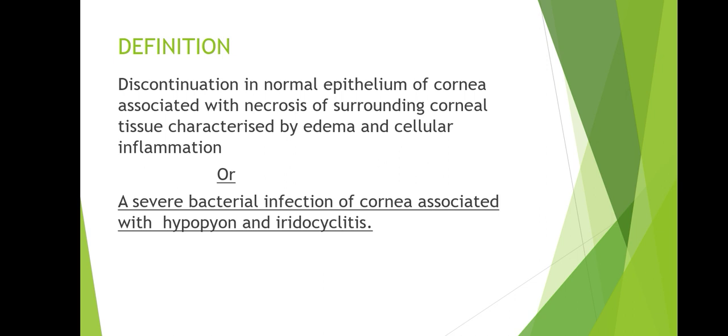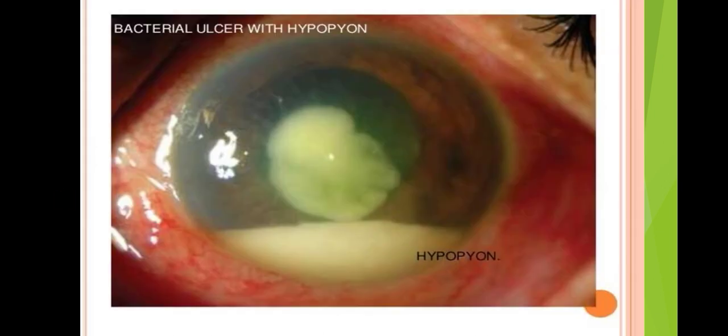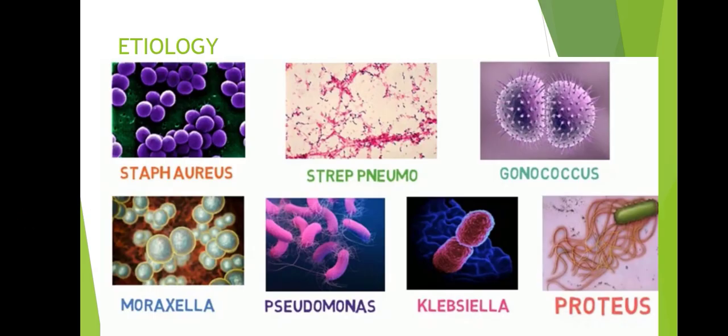Hypopyon is a collection of exudate in the anterior chamber. Iridocyclitis is inflammation of the iris and ciliary body. This is how the ulcer looks — the central part shows ulceration and the white part at the bottom shows hypopyon. Etiology includes Staphylococcus aureus, Streptococcus pneumoniae, Gonococcus, Moraxella, Pseudomonas aeruginosa, Klebsiella, and Proteus.